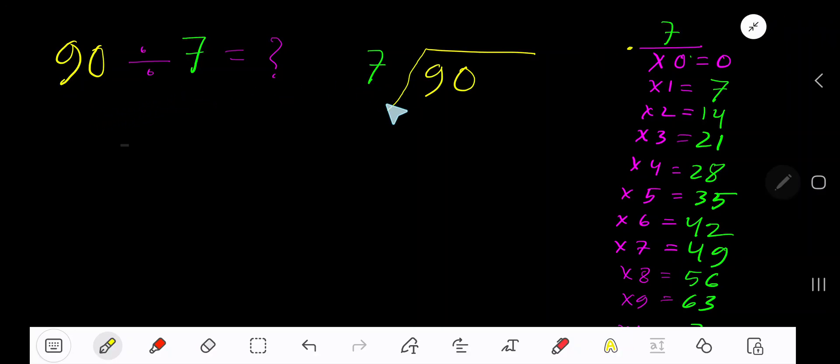90 divided by 7. Here 7 is a divisor, so we need the multiplication table of 7. 7 times 0 is 0, 7 times 1 is 7, 7 times 2 is 14, 7 times 3 is 21, 7 times 4 is 28.